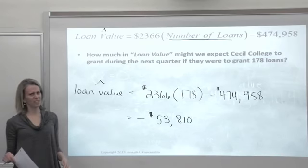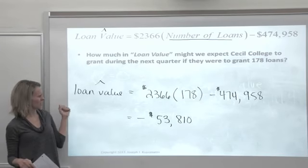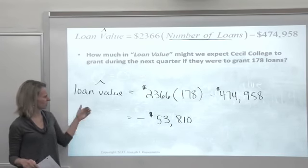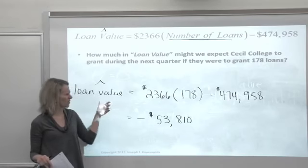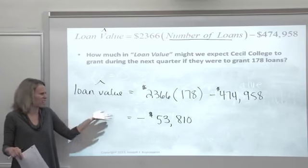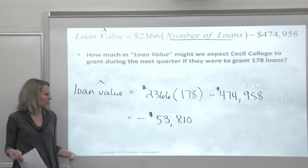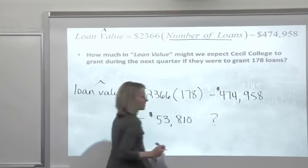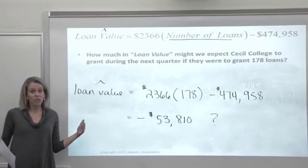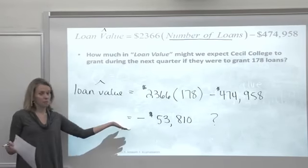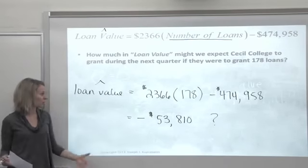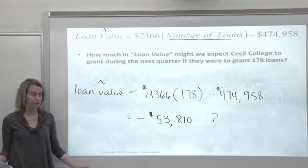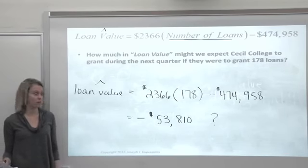So does that make a whole lot of sense here? The regression equation is predicting that for a school that issues 178 loans, the loan value is a negative number. Your regression equation is not perfect. Here's an example of where it's not perfect. Clearly the loan value for Cecil College was positive.